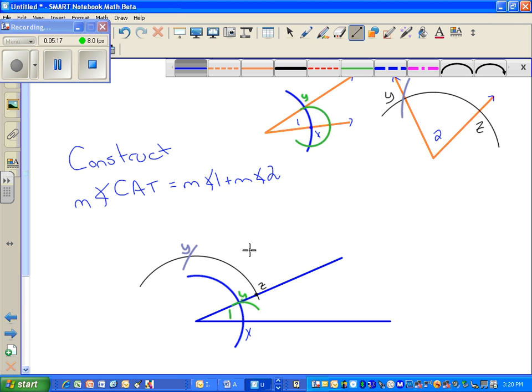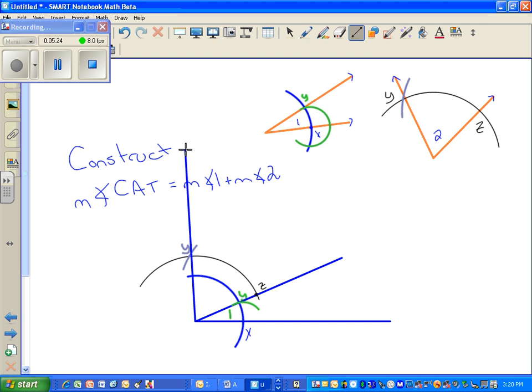So now I've recreated the point Y. Now I can connect from my vertex to my point of intersection, and I've copied angle 2. So I'm going to label this angle 2.